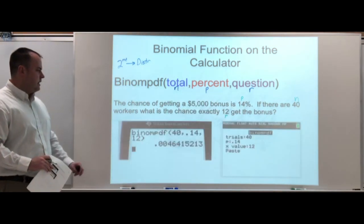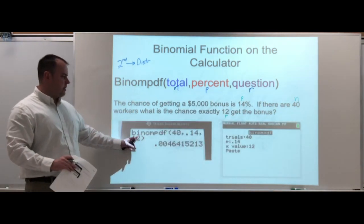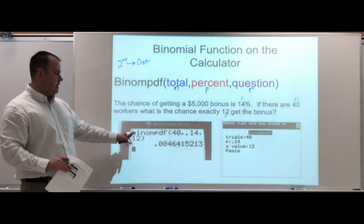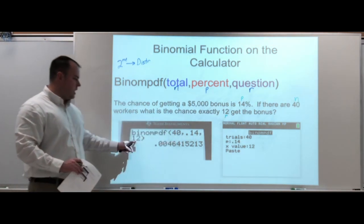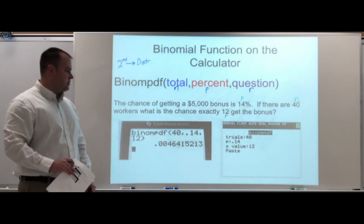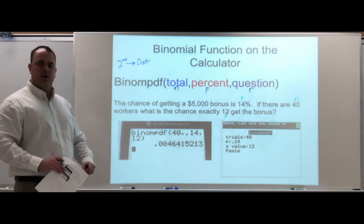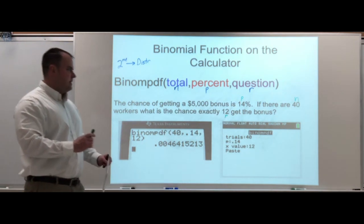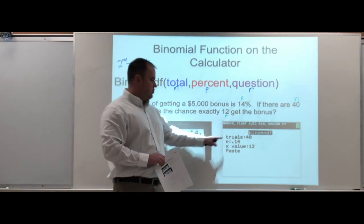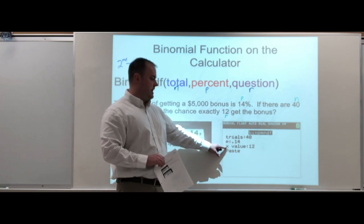Depending on what calculator you have, some of the older ones you have to plug it in like: binompdf(40, 0.14, 12), and then that gives us the 0.0046, which you would then turn into a percentage. If you have some of the newer calculators, they ask for trials, p, and an x value.